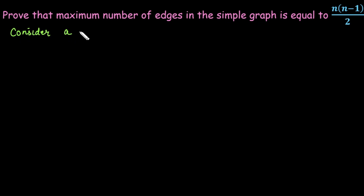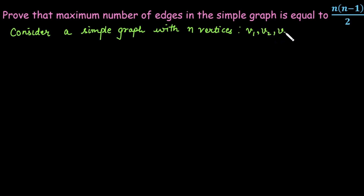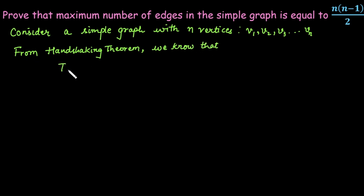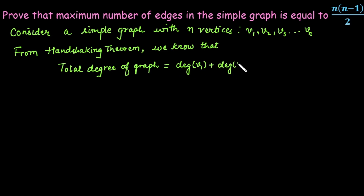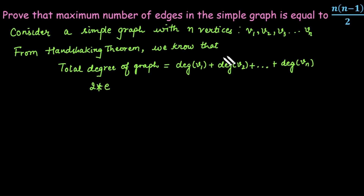We consider a simple graph with n vertices: v1, v2, v3, up to vn. From the handshaking theorem, the total degree of the graph equals the degree of v1 plus the degree of v2, continuing up to the degree of vn, and this equals twice the number of edges E.